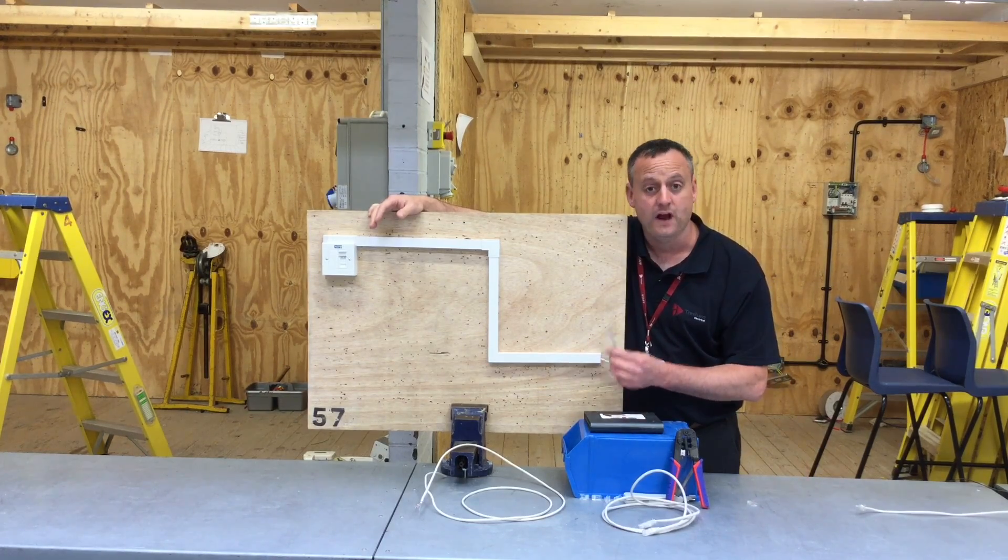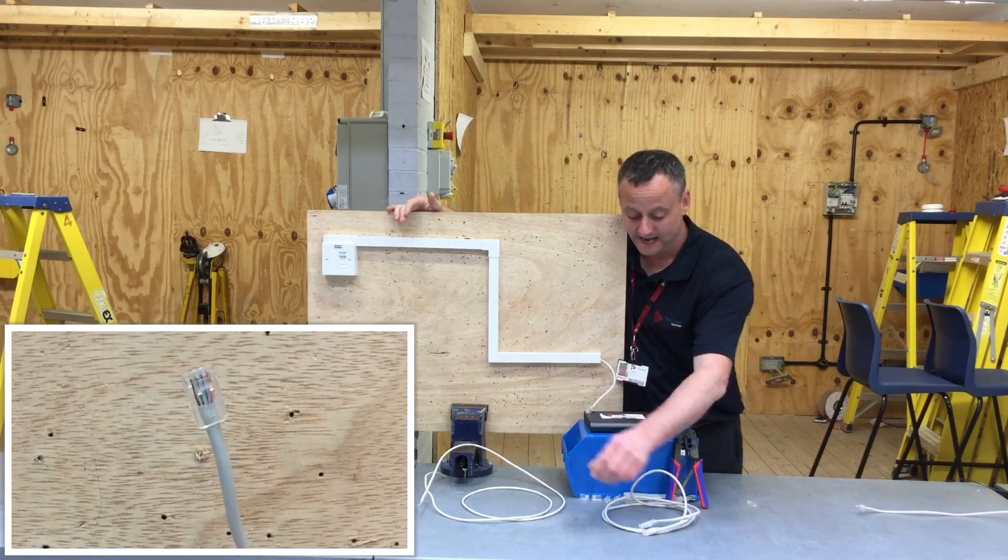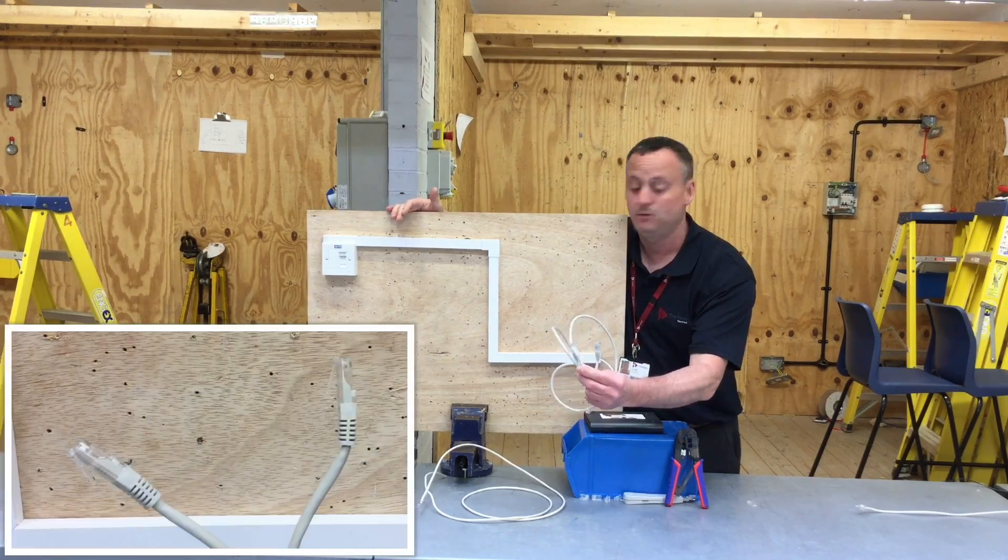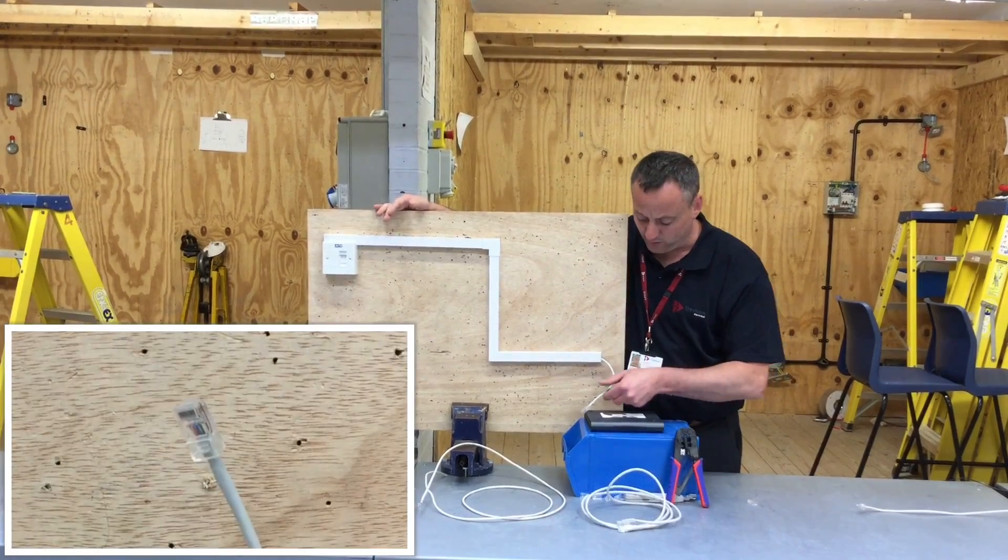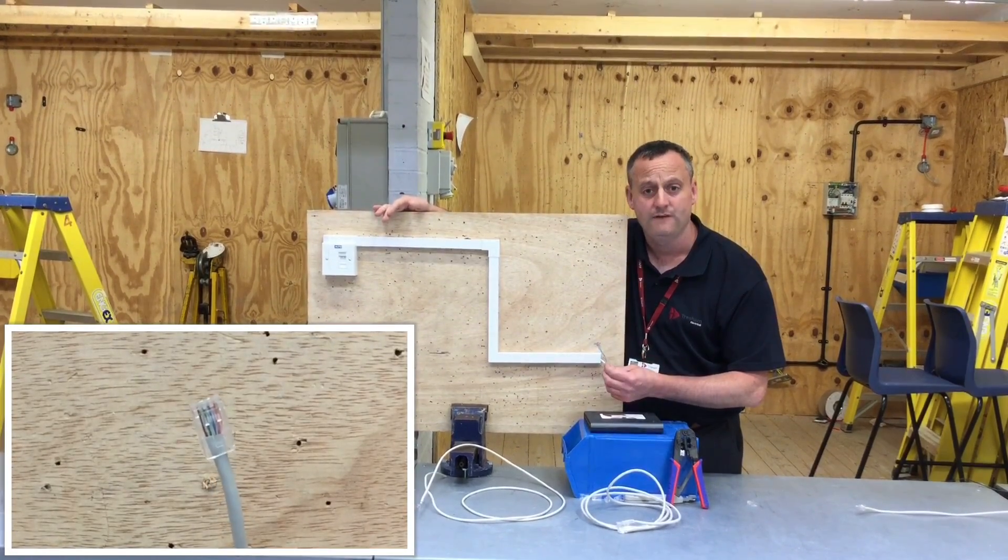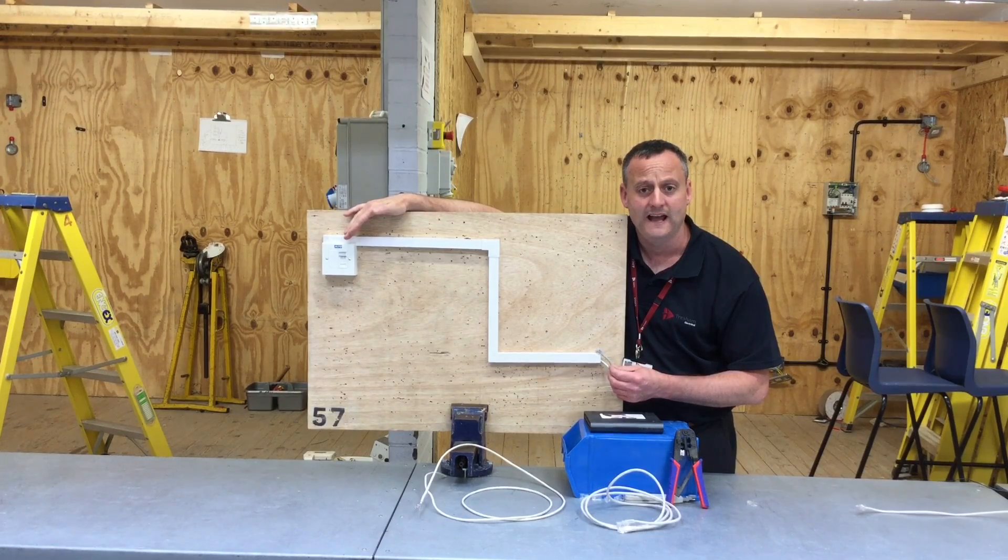So on one end we've got an RJ45 connection, on the other end we've got a faceplate to facilitate a patch cable so this cable can go from the plate then into the back of your games console. We're going to look at the technique required to make off the RJ45 end and the faceplate end as well, using a slightly different tool at that end.